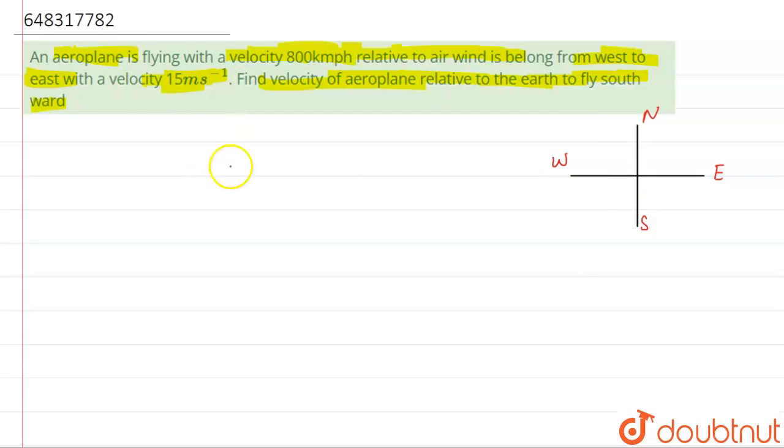So now what is given? The aeroplane is flying southwards. So I'll draw the vector of aeroplane. The aeroplane is flying southwards, and the wind is in the direction from west to east. If you see over here, it's in the direction of west to east. That means over here the wind will be somewhat in this direction.